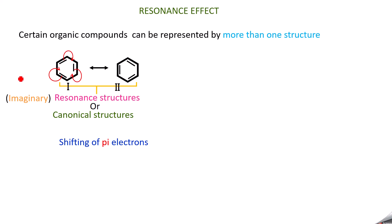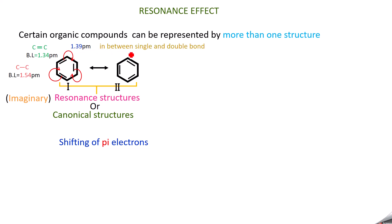If you take carbon-carbon single bond length in an organic compound, it is found to be 1.54 picometers. Carbon-carbon double bond length is 1.34 picometers. But in benzene, which has both double and single bonds, the carbon-carbon bond length is found to be 1.39 picometers — experimentally proved. This value is in between single and double bond and is the same for all carbon-carbon bonds in the benzene ring.